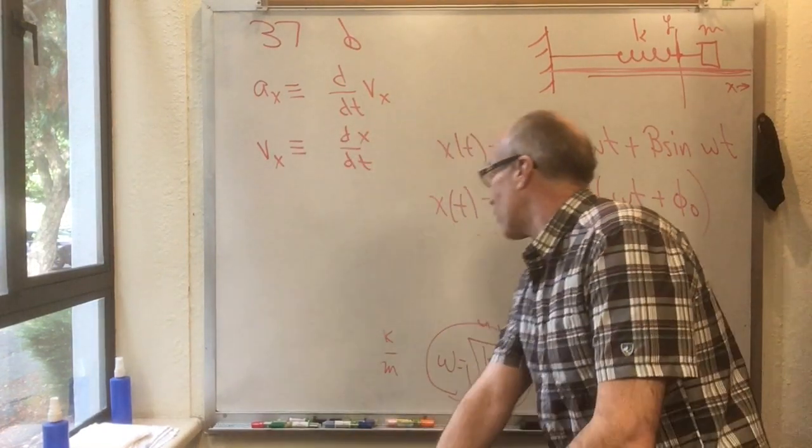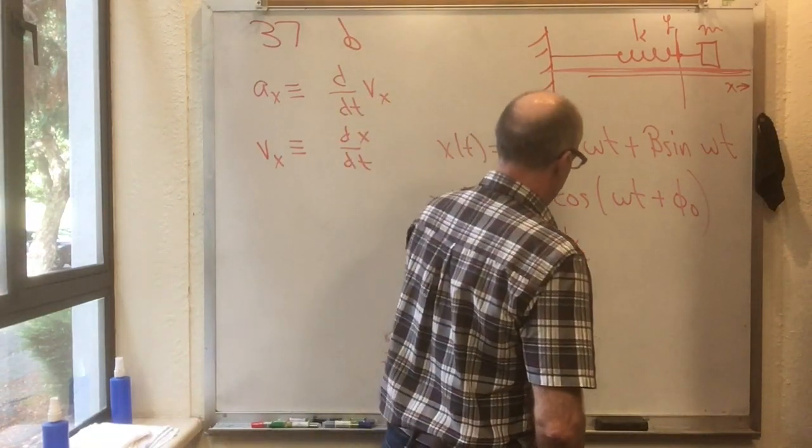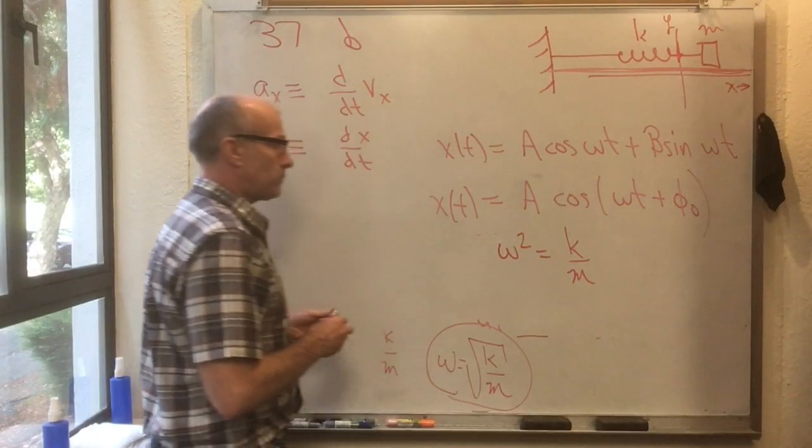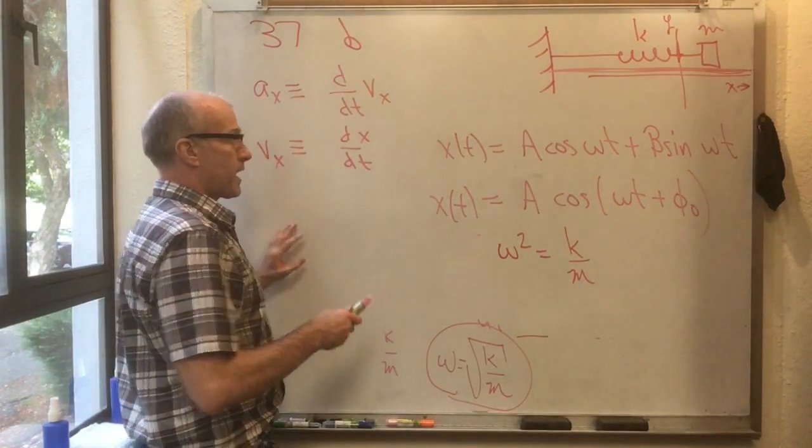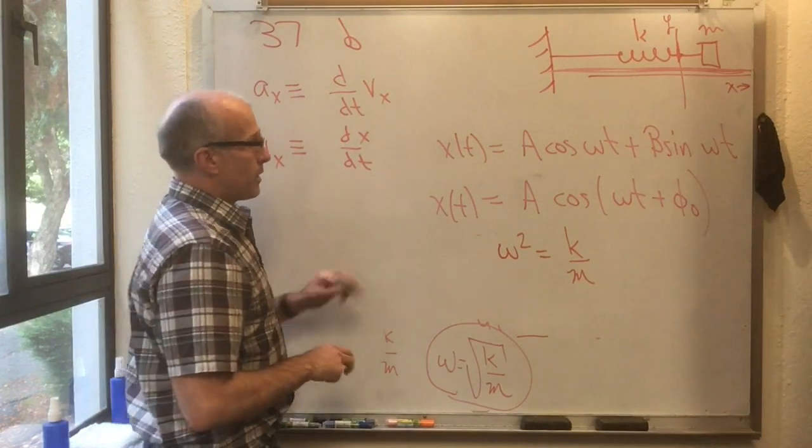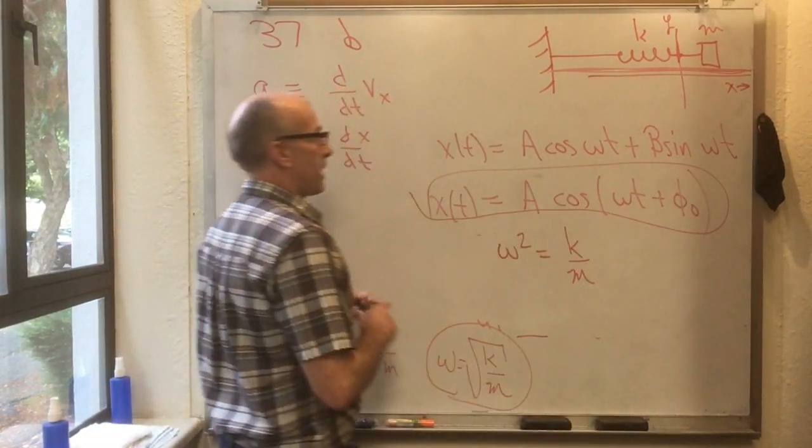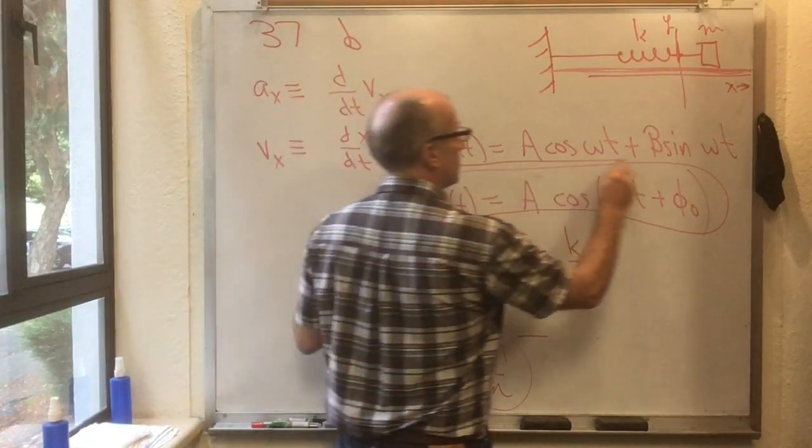And once again, the only condition is that omega squared is equal to k over m. If that condition is satisfied, this works. So here's one thing though. This one is redundant. This isn't a new guess. This was two great guesses.